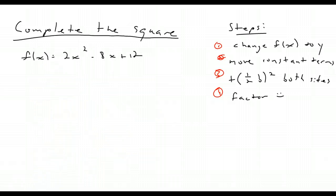Looking at another example. Another thing that we have to keep in mind is we want a to equal 1. So a has to equal 1 when completing the square. Right now it's a 2.